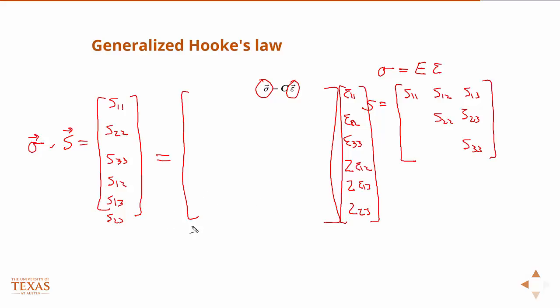In order for this equation to be valid, what is the shape of C then? It's a 6 by 6, so how many components? 36.